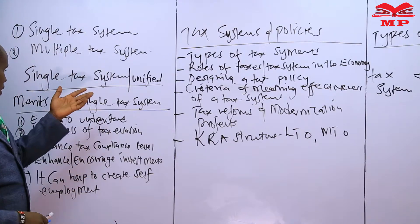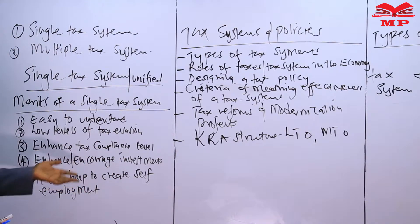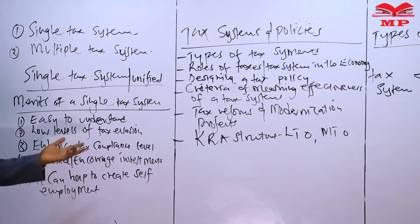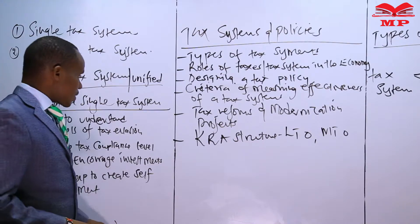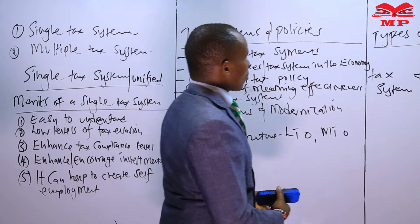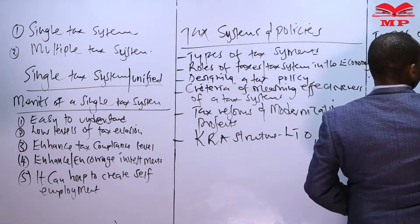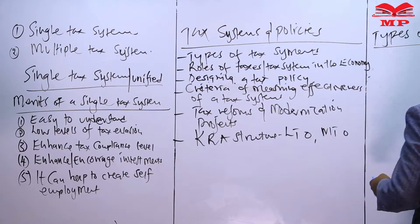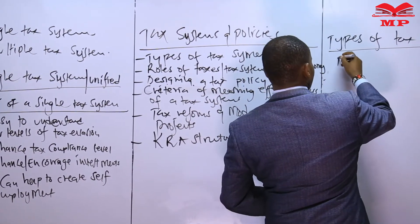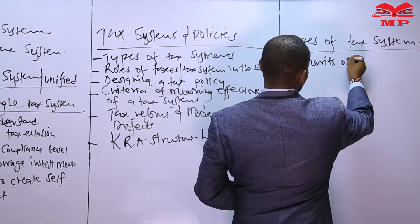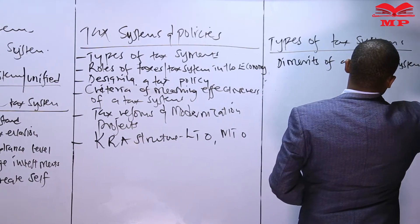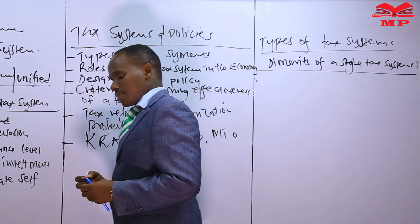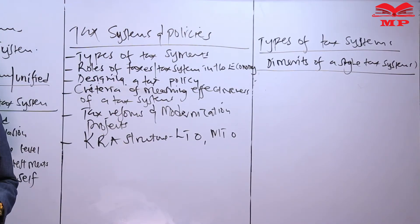Those are some of the advantages or merits of a single tax system. As you know, if something has merits, then disadvantages can also be experienced. So let's also look at some of the demerits of a single tax system. What are some of the problems we can experience with this kind of tax system?